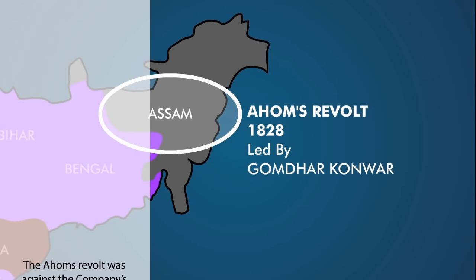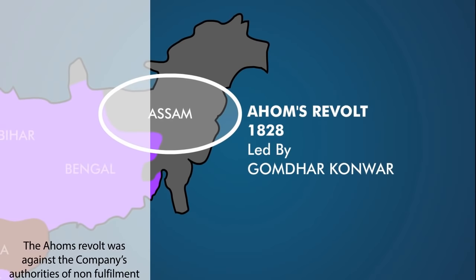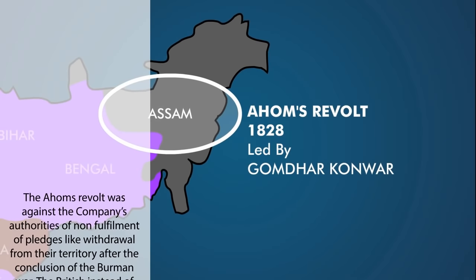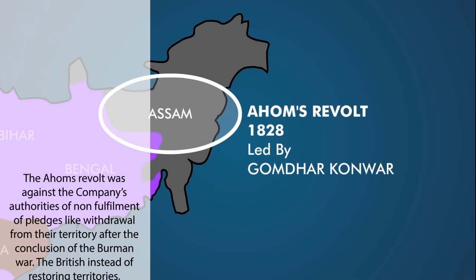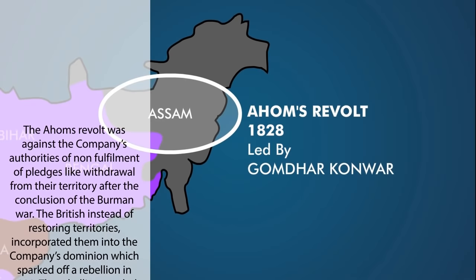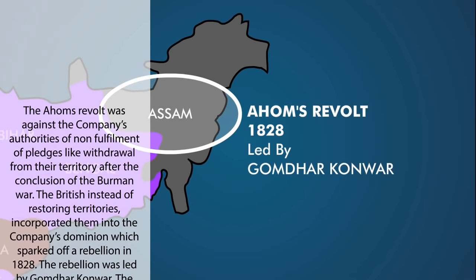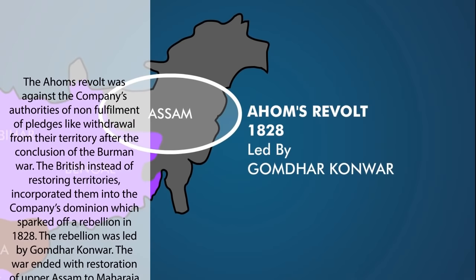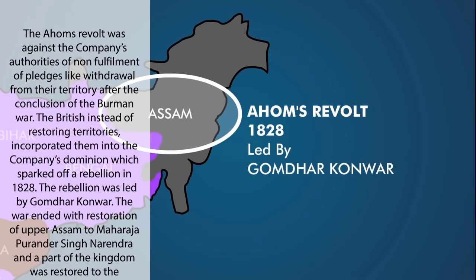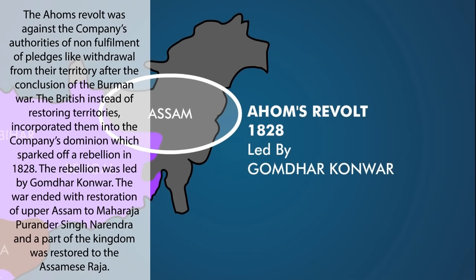The Ahoms revolt was against the company's authorities' non-fulfillment of pledges, like withdrawal from their territory after the conclusion of the Burman war. The British, instead of restoring territories, incorporated them into the company's dominion, which sparked off a rebellion in 1828. The rebellion was led by Gomdhar Konwar. The war ended with restoration of Upper Assam to Maharaja Purandar Singh Narendra and a part of the kingdom was restored to the Assamese Raja.